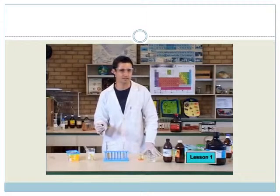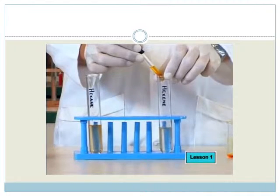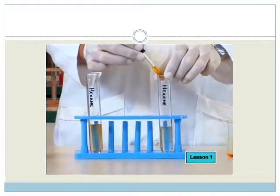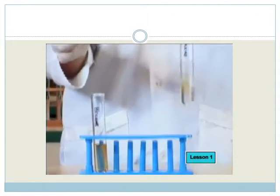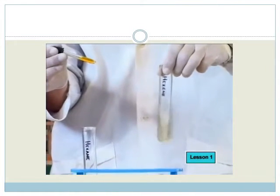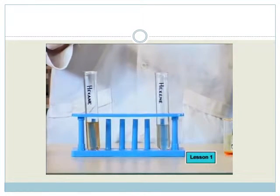Let's try hexene and see what happens. Once again, we add the same number of drops of the bromine solution to the hexene. Let's check that. Wow. This is interesting. It seems that when we add bromine to unsaturated hexene, the bromine color quickly disappears.